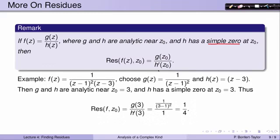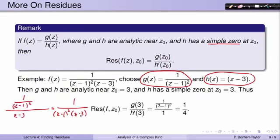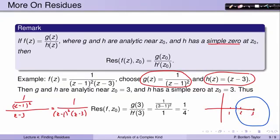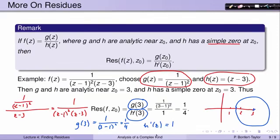Let's return to f(z) = 1/((z-1)²(z-3)), which has a simple pole at 3. We write g(z) = 1/(z-1)² and h(z) = z-3. Near z=3, g is analytic, and h has a simple zero at 3. By the formula, the residue of f at 3 is g(3)/h'(3). Now g(3) = 1/(3-1)² = 1/4, and h'(3) = 1 since the derivative of (z-3) is 1 everywhere. Therefore, the residue of f at c0 = 3 is 1/4. You could have found this using the simple pole formula as well — this is just another way of finding residues.